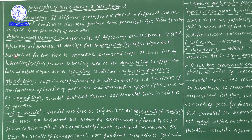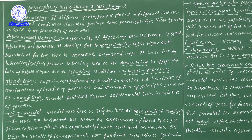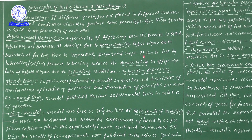Hybrid vigor can be maintained for a long time in vegetatively propagated plants. Why? Because in vegetative propagation there is no chance for the process of meiotic division. When meiotic division is absent, there is no chance for the segregation of characters. So hybrid vigor remains, the good characters are maintained, and these offspring maintain good characters for a long time through vegetative propagation.